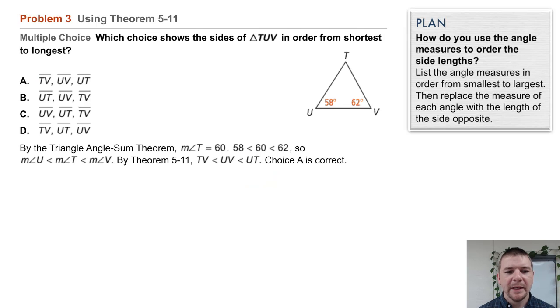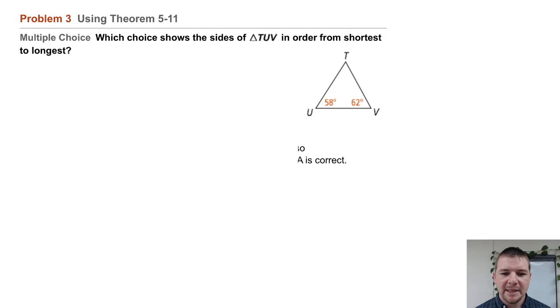Problem 3, using Theorem 5-11. This one's multiple choice. Which choice shows the sides of triangle TUV in order from shortest to longest?